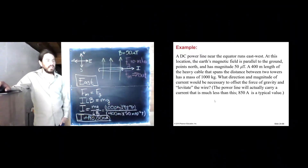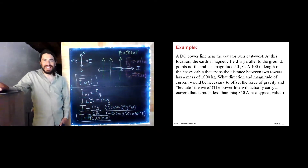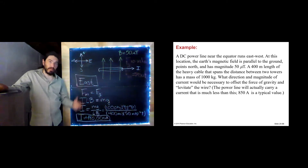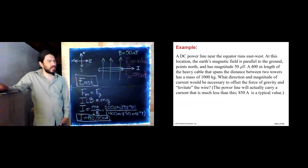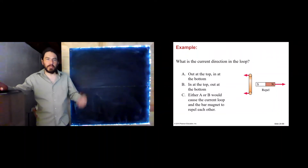Notice that in the example statement, it says 850 amps is more of a typical value for this type of DC power line. In this country, most of our high-voltage power lines are AC, because it turns out to work a lot better for household electricity, and we'll go into that more in a couple of chapters. Let's just do a few more examples here to practice a lot of what we've learned in this chapter.